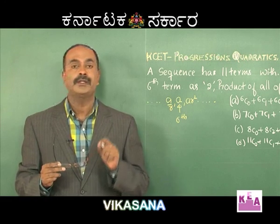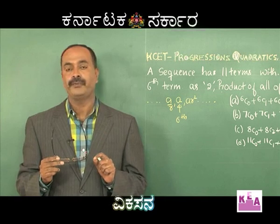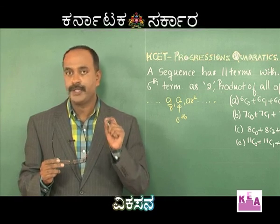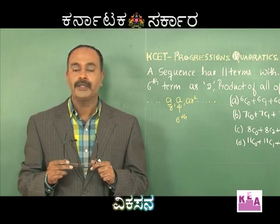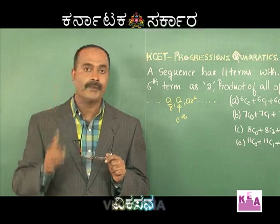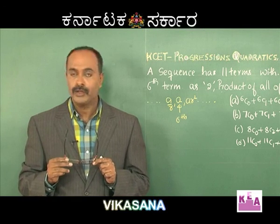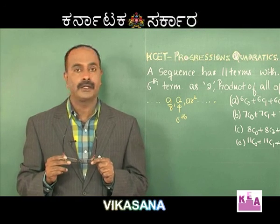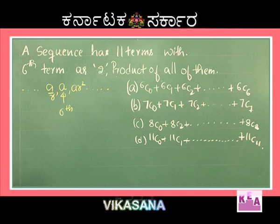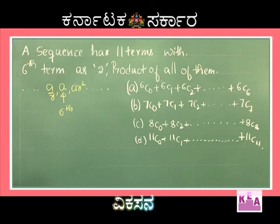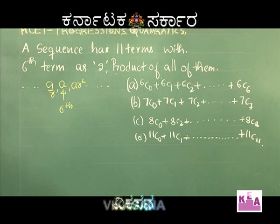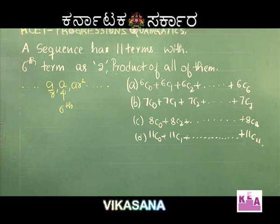This second concept is a combination of both binomial theorem and permutations and combinations, which you must be aware of from 11th standard. Now, coming back to the question: a sequence has 11 terms with the 6th term as 2. Find the product of all of them.